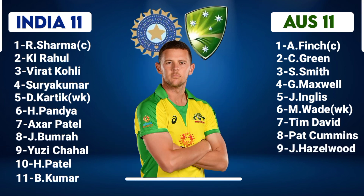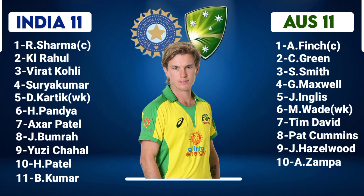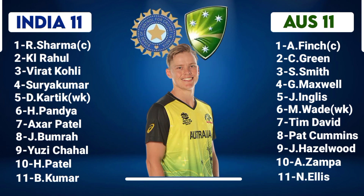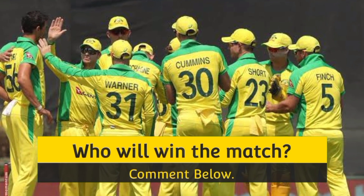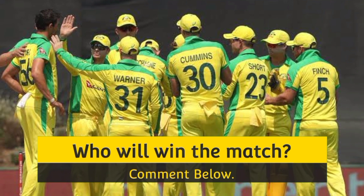Australia Bowlers: No.8 Pat Cummins, Right-Arm Fast Bowler. No.9 Josh Hazlewood, Right-Arm Fast Bowler. No.10 Adam Zampa, Right-Arm Leg Spinner. No.11 Nathan Ellis, Right-Arm Fast Bowler. Viewers, which team will win the T20 match? Please comment below.